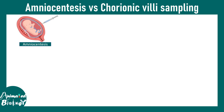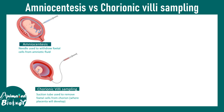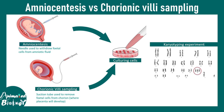Amniocentesis is one way to screen what happens in the fetal window. Alongside that, there is another method known as chorionic villus sampling, where a small part of the chorion — basically during placental development — is taken out. Cells from both these methods are cultured and karyotyping can be performed to understand what goes wrong at the chromosomal level. Both techniques are very important for diagnosing fetal developmental disorders.